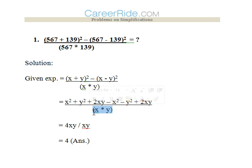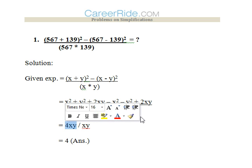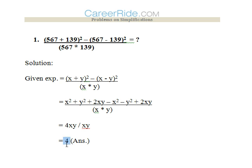In the numerator, x² and -x² cancel, y² and -y² cancel, and 2xy + 2xy gives 4xy. So we have 4xy in the numerator and xy in the denominator. Therefore 4xy ÷ xy = 4, which is the answer.